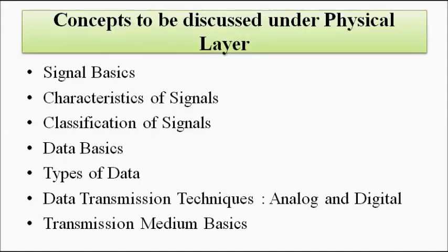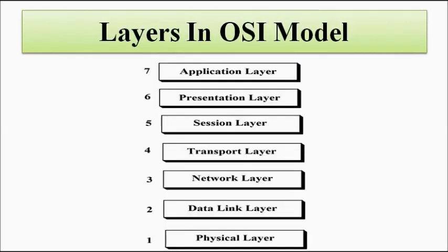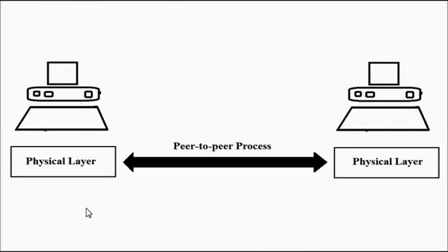We will cover all these concepts in small portions in the upcoming videos, starting with signal basics, signal characteristics, and data transmission. An important characteristic of the TCP/IP model and the OSI model is peer-to-peer communication — the physical layer on the source side communicates only with the physical layer on the destination side.